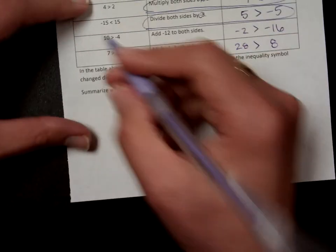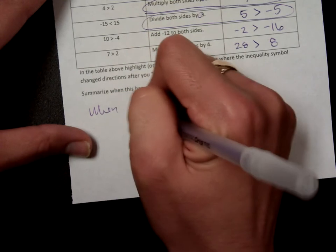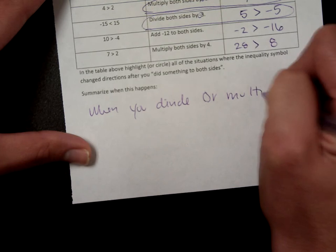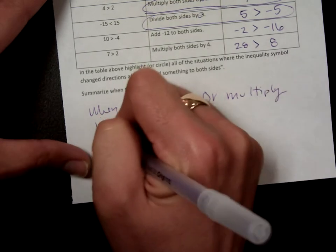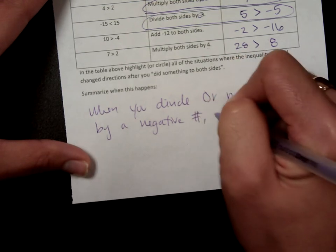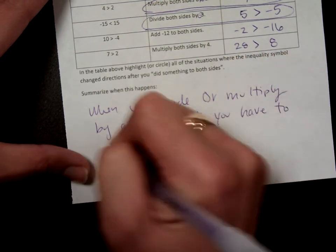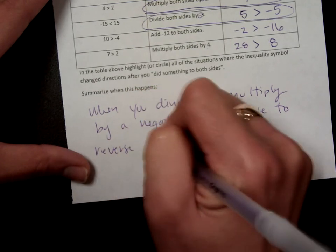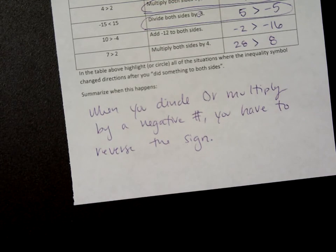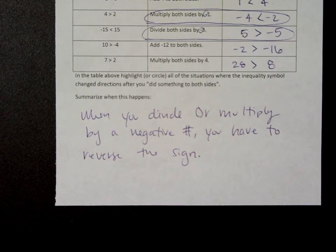So, that's what we need to write at the bottom. And what we mean by reverse the sign is, if it was less than, then now you have to make it greater than. So, when you divide or multiply by a negative number, you have to reverse the sign.